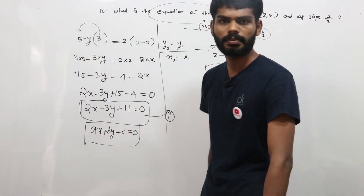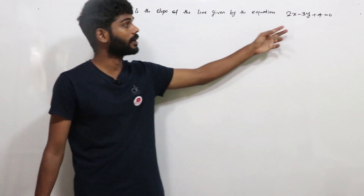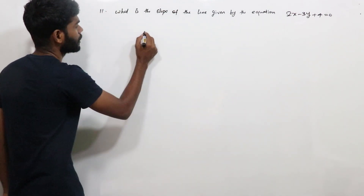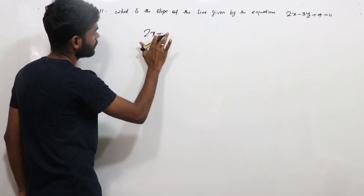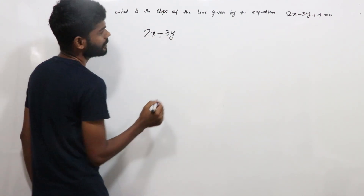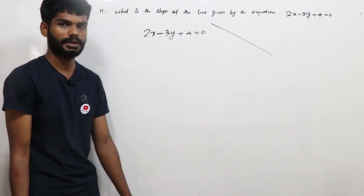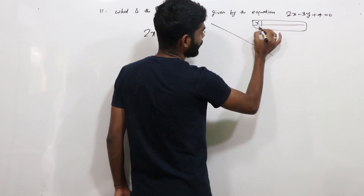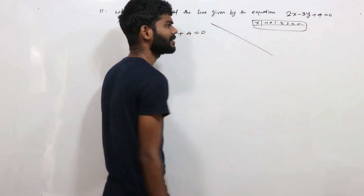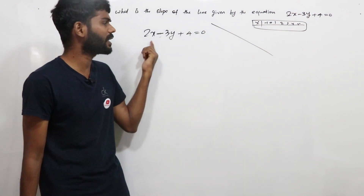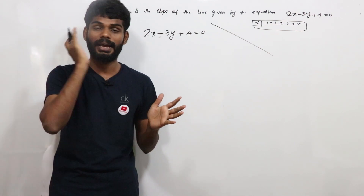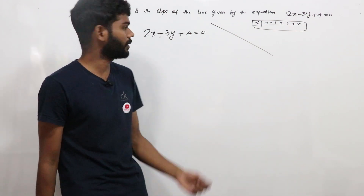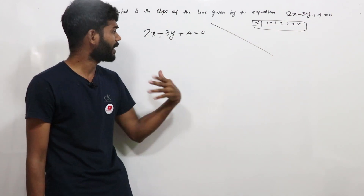Next question: What is the slope of the line given by the equation 2x minus 3y plus 4 equal to 0? That is the line equation in the format ax plus by plus c equal to 0.